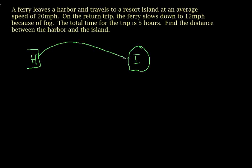The ferry goes from the harbor to the island at a rate of 20 miles an hour. Now he comes back from the island to the harbor at a slower rate of 12 miles an hour - it's foggy. The total round-trip time is five hours, and we're assuming that all of the travel time is spent traveling. In other words, he gets to the island, just throws people off the boat and keeps going, then he returns at 12 miles an hour.